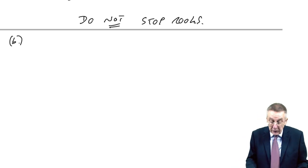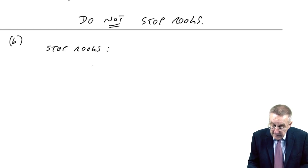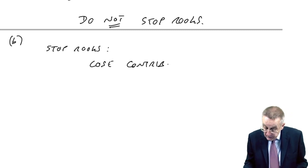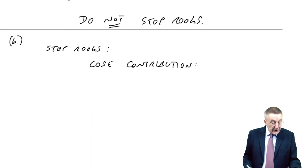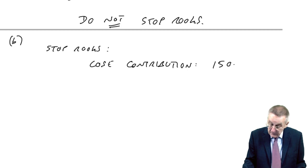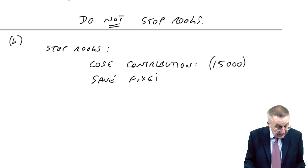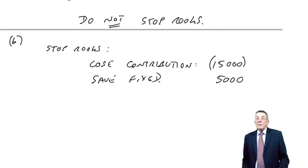Taking the same approach as before: we already know the effect on its own of stopping rooks — we lose the contribution of 15,000 and we save fixed costs of 5,000. That's as before.